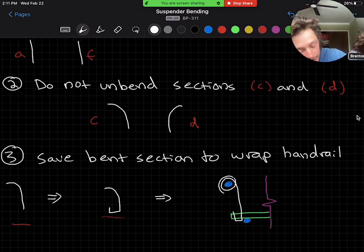This length here ends up being about 1.1 meters, I believe. That's not important in this specific case. What's more important is that you are using that already bent section to wrap around the handrail.